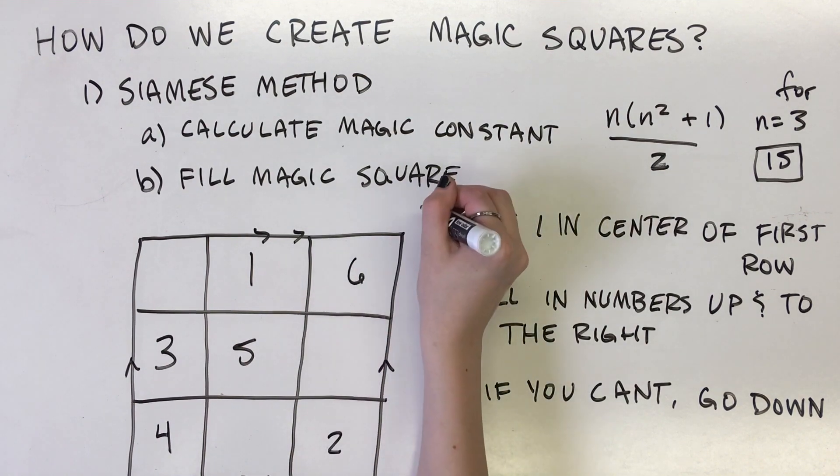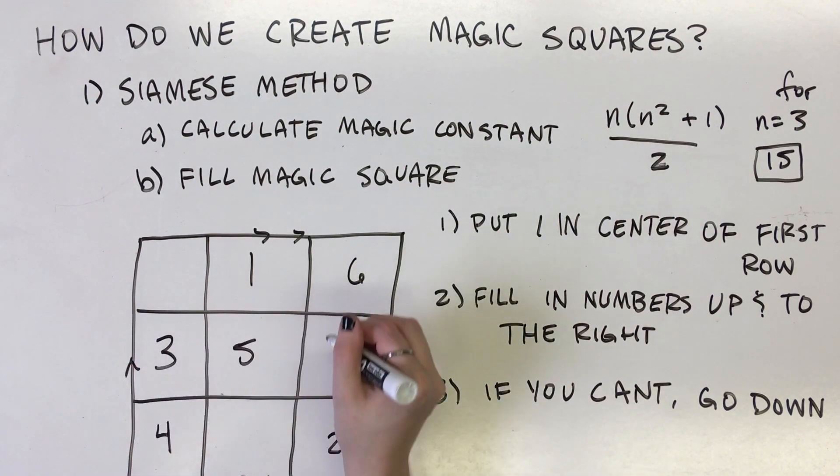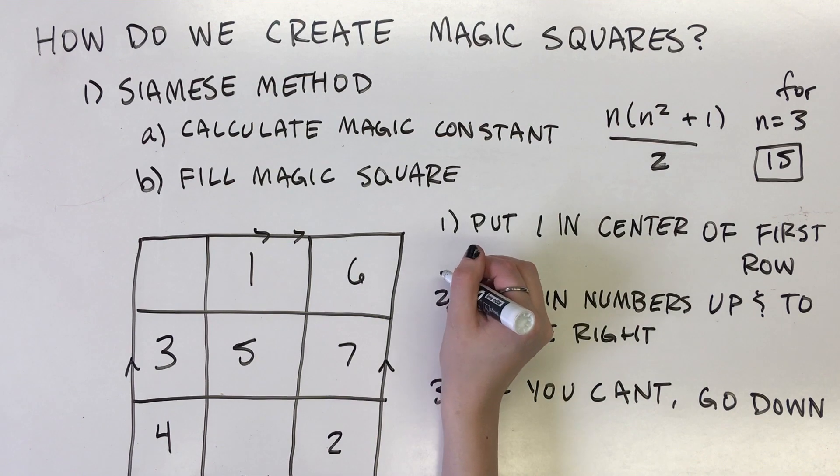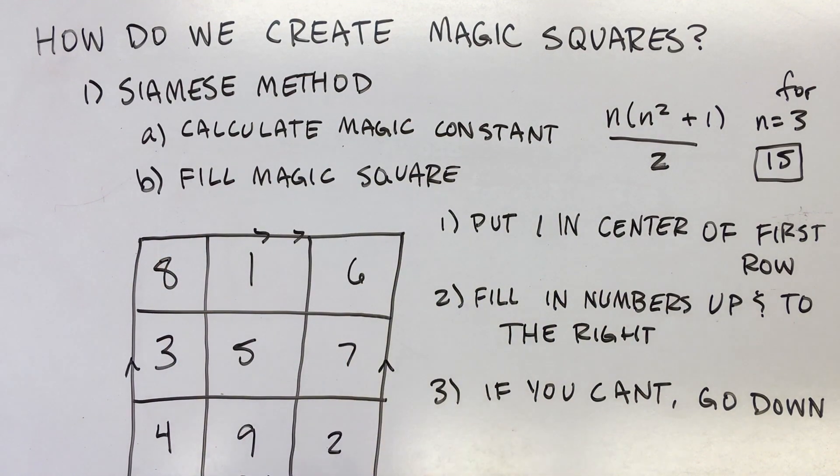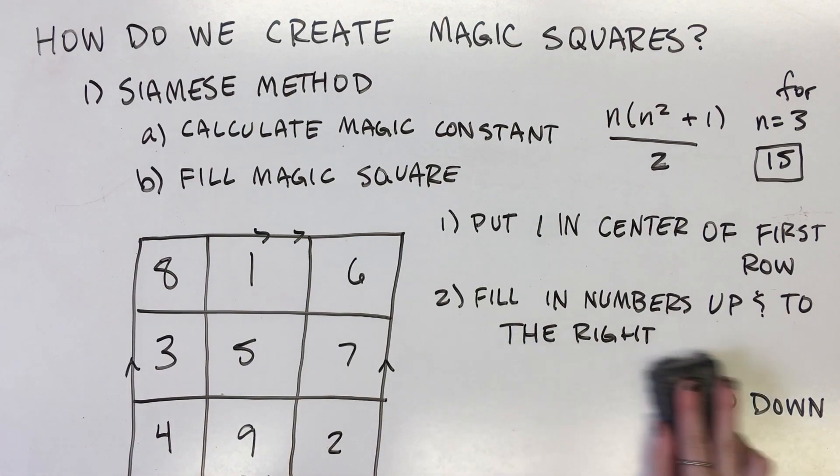Lastly, if the movement takes you to a box that is already occupied, go back to the last box that has been filled in and place the next number directly below it. Then proceed with the up 1, right 1 method.